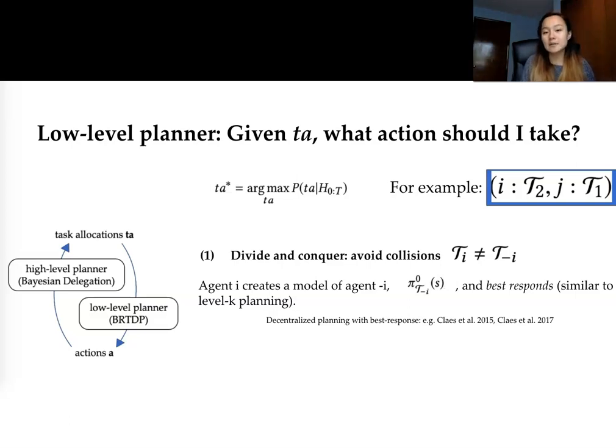This is pretty similar to decentralized planning algorithms that also use best response such as the works done by Daniel Claes et al. The main difference between our works is that we adopt an object-oriented representation whereas they focus on a spatial representation, focusing on locations.